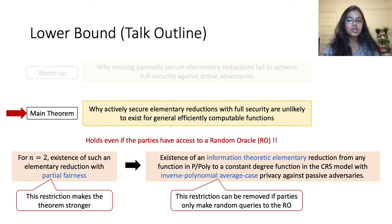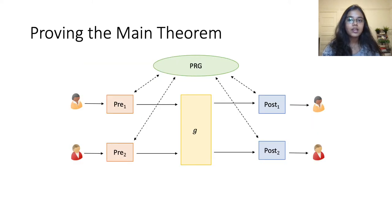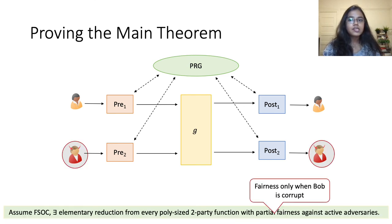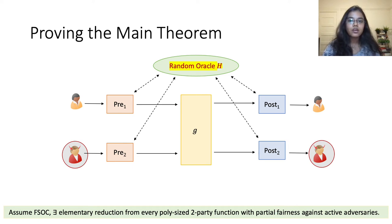Finally, this caveat of weak privacy in our implication can be removed if the parties are only allowed to make random queries to the random oracle. To prove this main theorem, we consider two parties, Alice and Bob. We assume for the sake of contradiction that there exists an elementary reduction from every polynomial-size two-party function with partial fairness against active adversaries — specifically partial fairness against a corrupt Bob. For simplicity, we assume that the PRG is instantiated with a random oracle, and that the parties invoke the oracle on randomly chosen seeds.